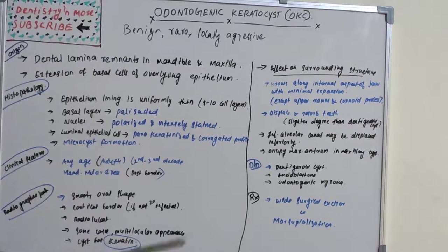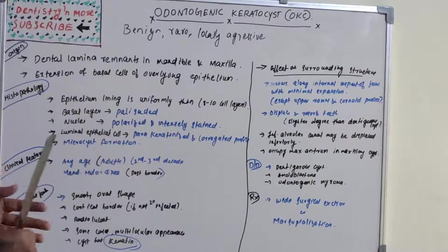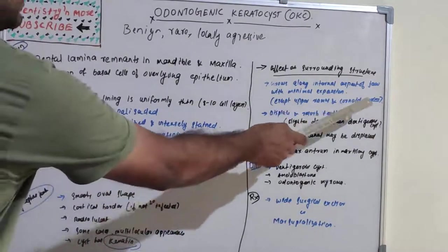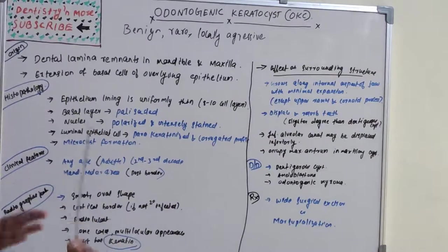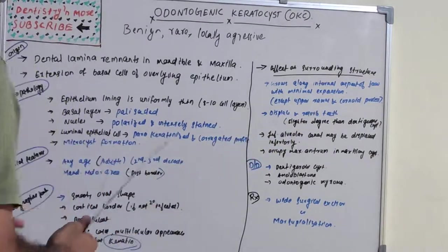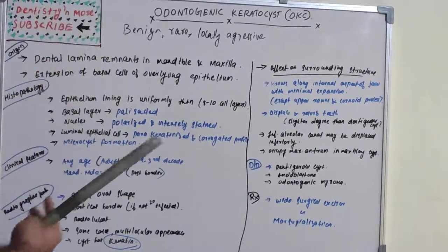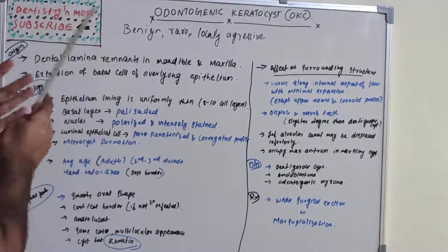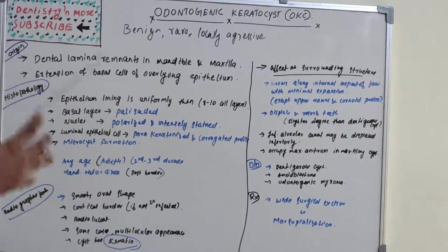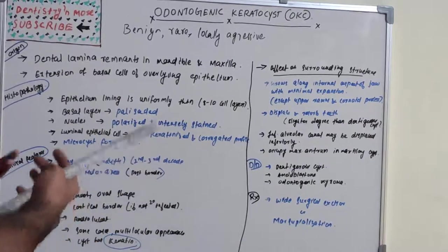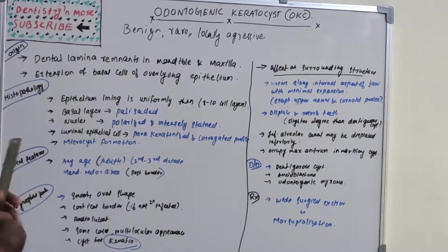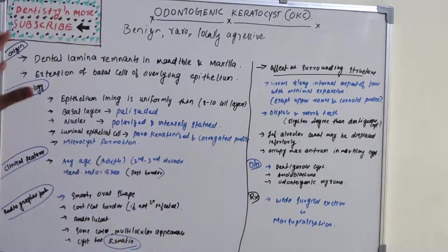Regarding the effect on surrounding structures: OKC grows along the internal aspect of the jaw with minimal expansion, but in the upper ramus and coronoid process it shows expansion. It displaces and resorbs adjacent teeth, though the degree of displacement and resorption is not as severe as with dentigerous cyst. The inferior alveolar canal may be displaced inferiorly due to pressure, and if the cyst is in the maxillary region it occupies the maxillary antrum.